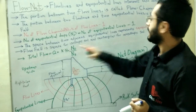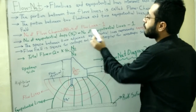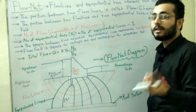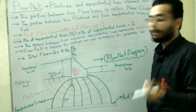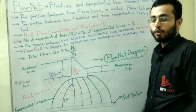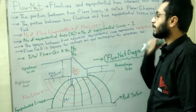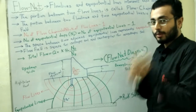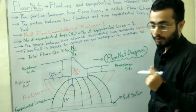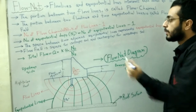Number of flow channels Nf equals number of flow lines minus one. Similarly, number of equipotential drops Nd equals number of equipotential lines minus one. These equations allow us to calculate the number of flow channels and equipotential drops from any flow net diagram.